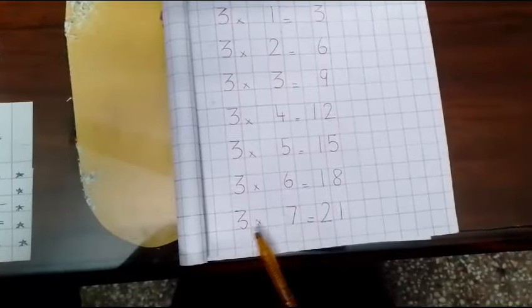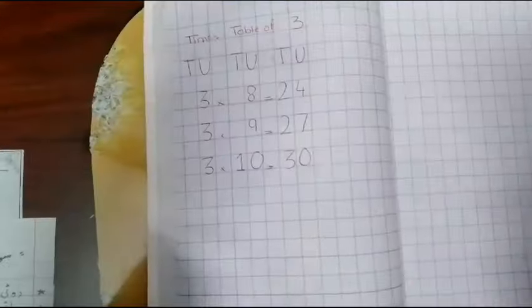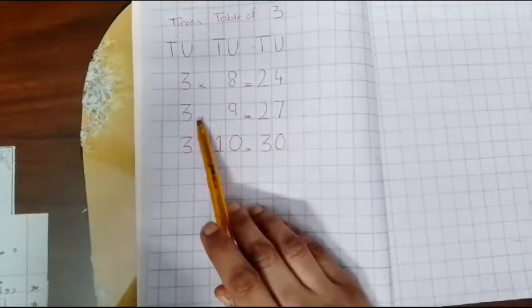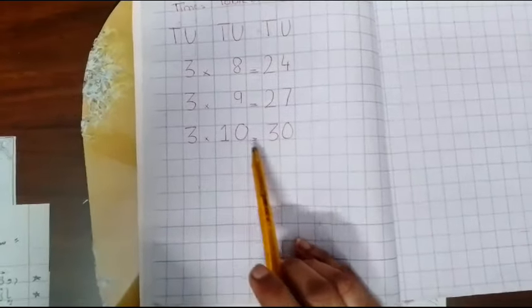3 times 7 is 21, 3 times 8 is 24, 3 times 9 is 27, 3 times 10 is 30.